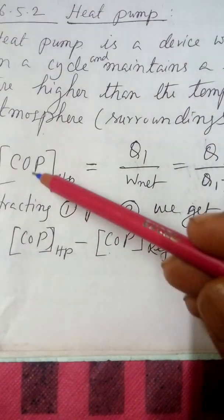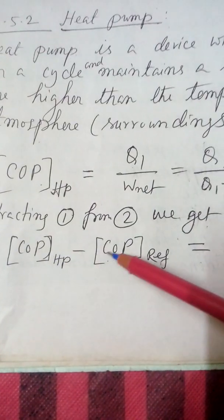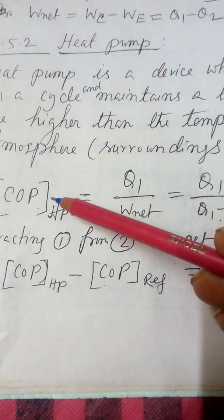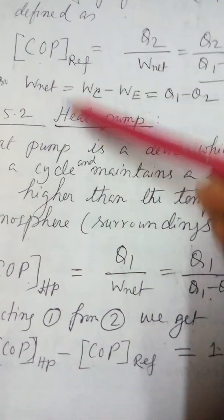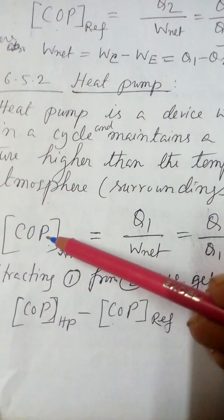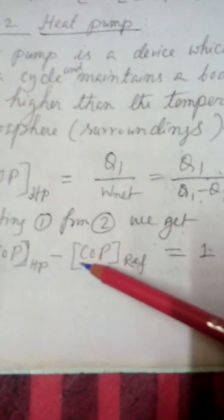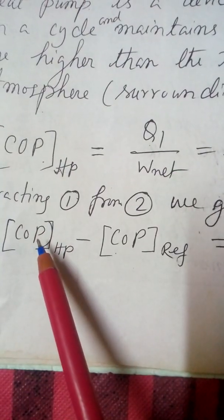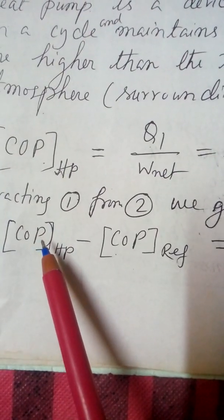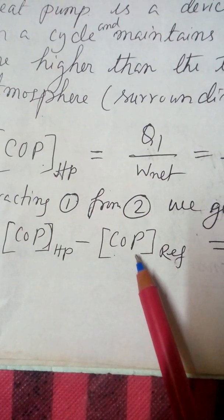So if you subtract COP of refrigeration from COP of heat pump, the result will be equal to 1. From this, you can see that COP of heat pump is always greater than COP of refrigeration.